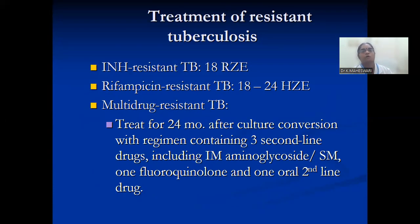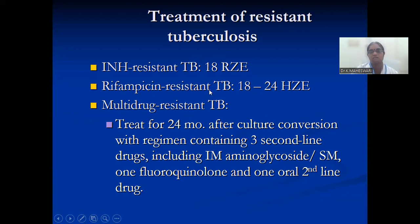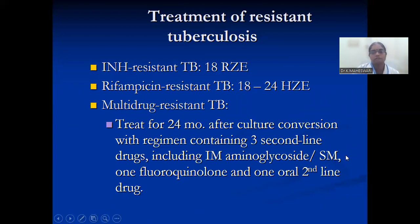Treatment of resistant tuberculosis: if only INH-resistant, give 18 months of rifampicin, pyrazinamide, and ethambutol. If rifampicin-resistant, give 18 to 24 months of INH, pyrazinamide, and ethambutol — whichever drug is resistant is omitted and the other first-line drugs are given. Multi-drug resistant TB is treated for 24 months after culture conversion with a regimen containing three second-line drugs including an aminoglycoside, one fluoroquinolone, and one oral second-line drug.